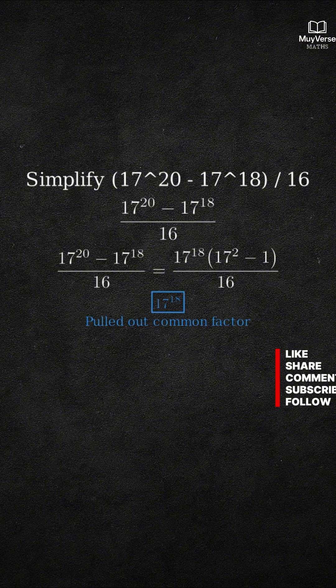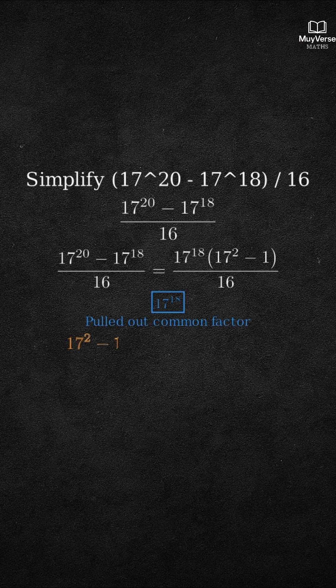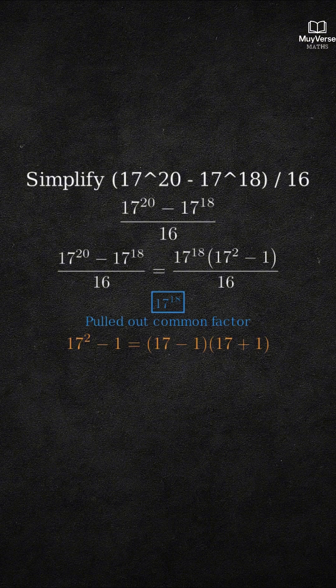Step 2. Inside the parentheses, we have 17 squared minus 1. This is a classic difference of squares. It factors as left parenthesis 17 minus 1 right parenthesis times left parenthesis 17 plus 1 right parenthesis.